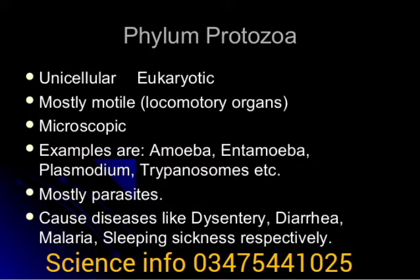Today we will talk about the phylum Protozoa. Protozoa are unicellular, having one cell, eukaryotic, having a true nucleus. Other characteristics: they are motile and microscopic. Examples of protozoans are Amoeba, Entamoeba, Plasmodium, and Trypanosoma.